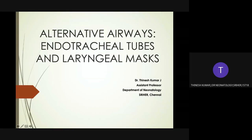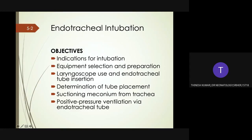Hello everyone. In this presentation we are going to see alternative airways, endotracheal tubes, and laryngeal mask. The objectives are the indications for an alternative airway during resuscitation, how to select and prepare the equipment for endotracheal intubation, how to use a laryngoscope to insert an endotracheal tube, how to confirm the endotracheal tube is in the trachea, how to suction thick secretion, and when to consider using a laryngeal mask for positive pressure ventilation.